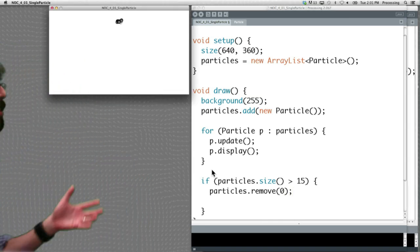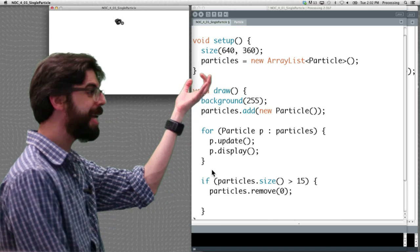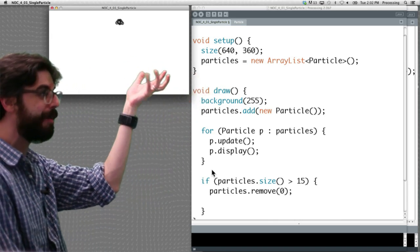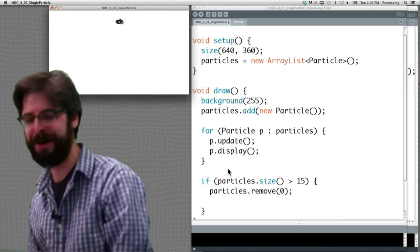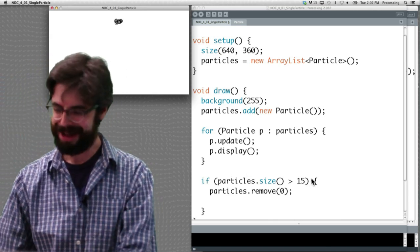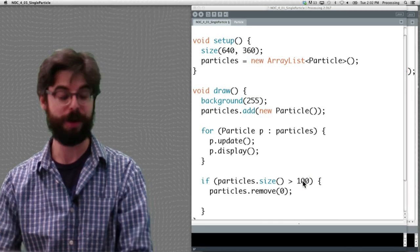If particles.size is greater than, let's just do something really simple right now, greater than 15, arbitrary number. Particles.remove 0. Let's do that. Now let's take a look at it. You can see they're making them and deleting them very quickly because we can only have 15 total.